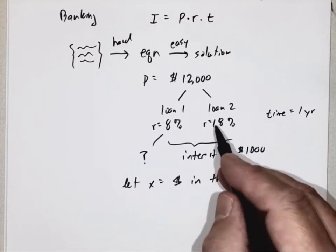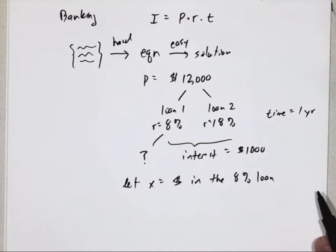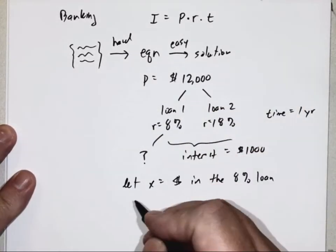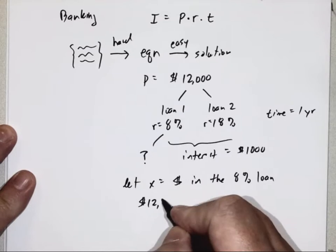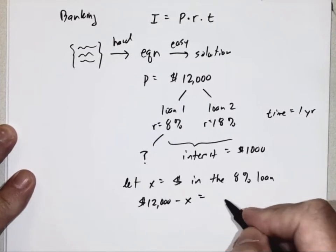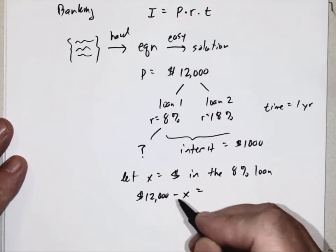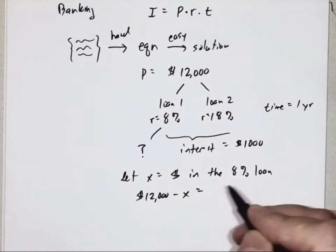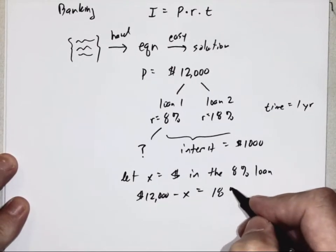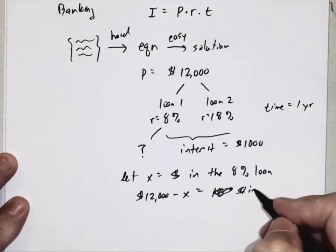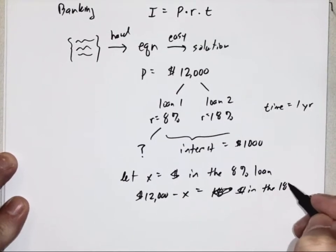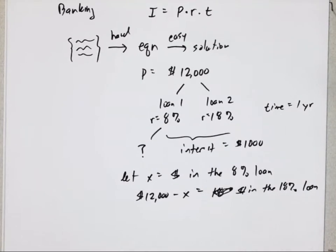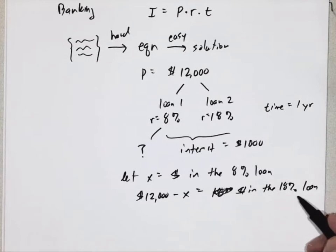If X is the amount of money in the 8% loan, then what is the amount of money in the 18% loan? It's whatever's left over. If I started with $12,000, then $12,000 minus X — the initial amount minus the money in the 8% loan — is how much money is in the 18% loan. So if X is how much is in the 8%, then $12,000 minus X, all the rest of the money, has to be in the 18% loan.